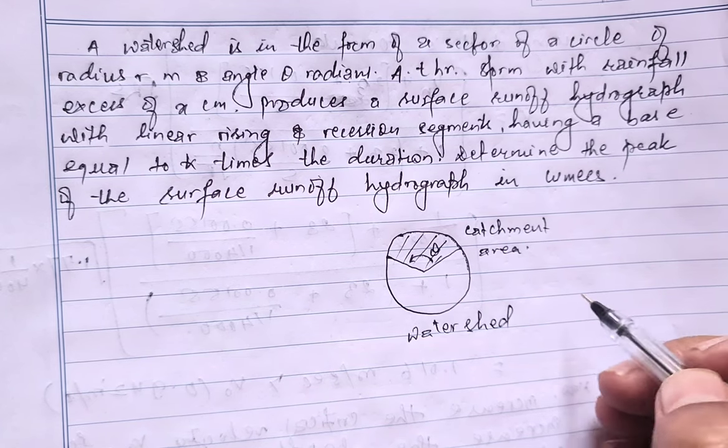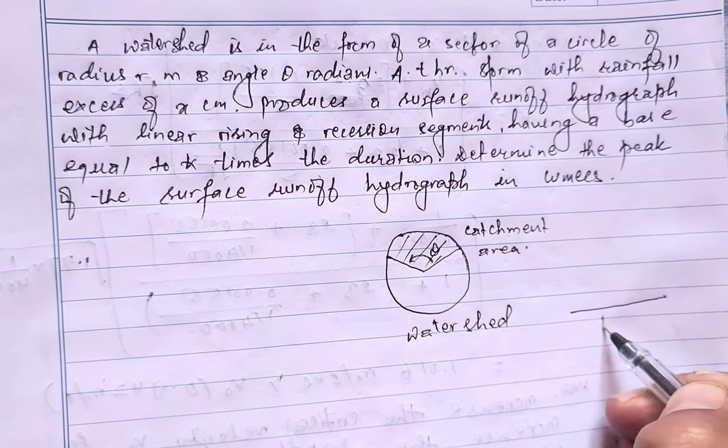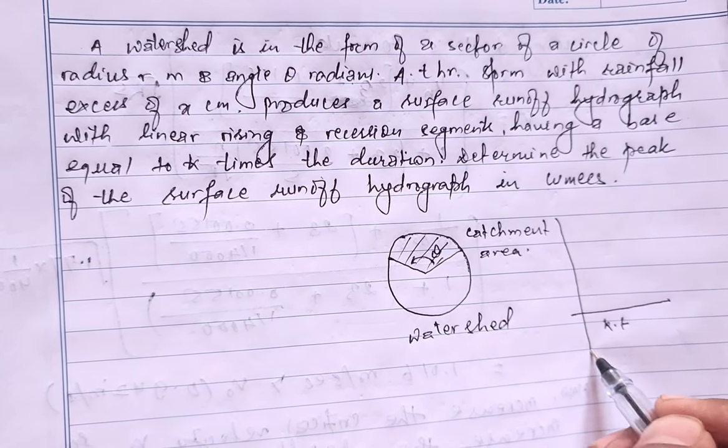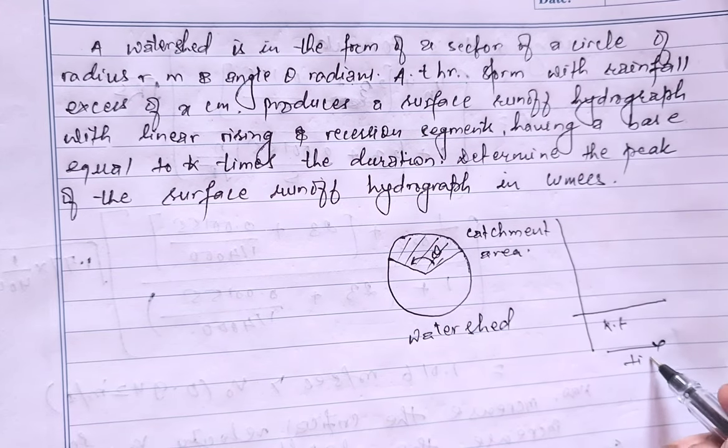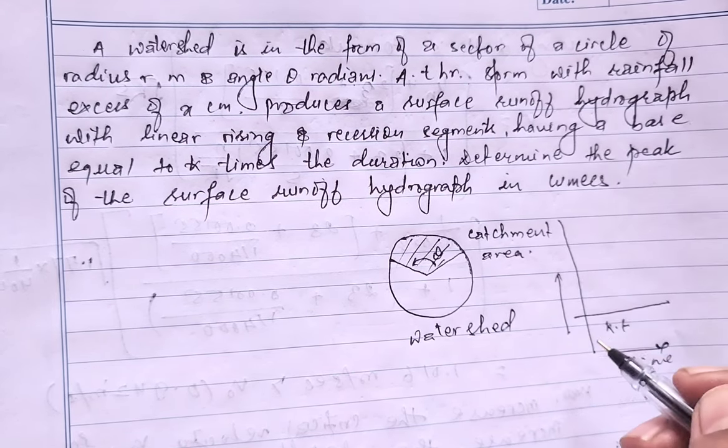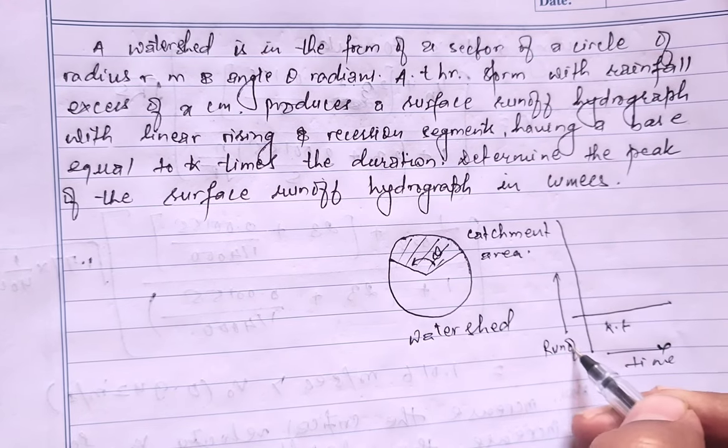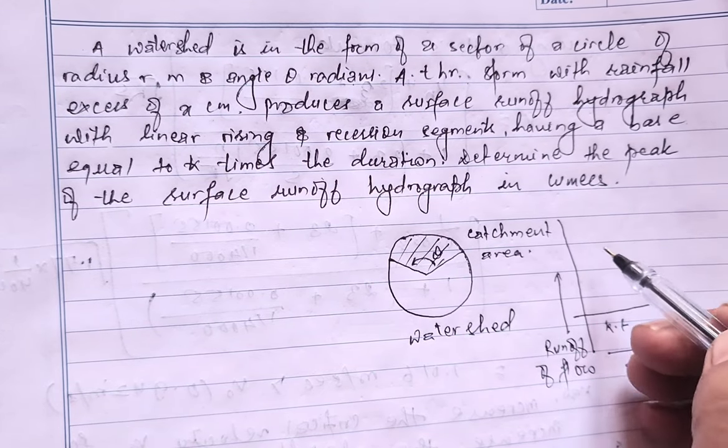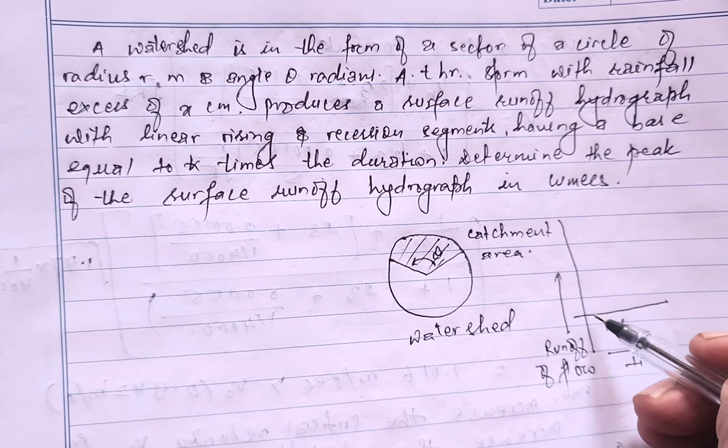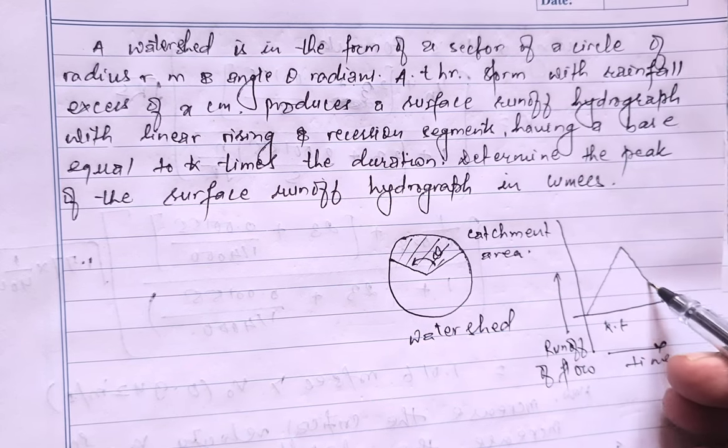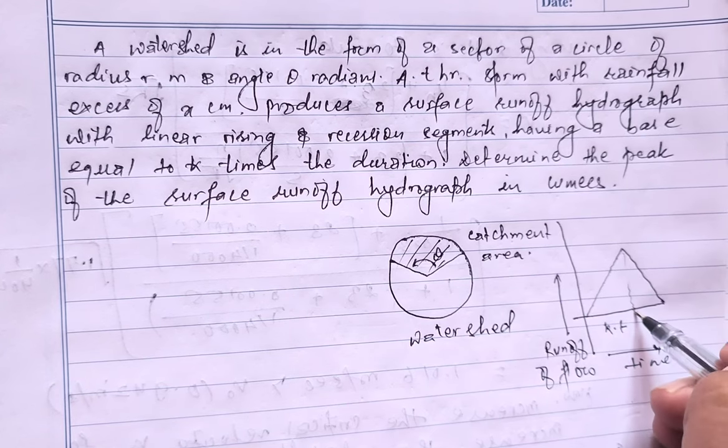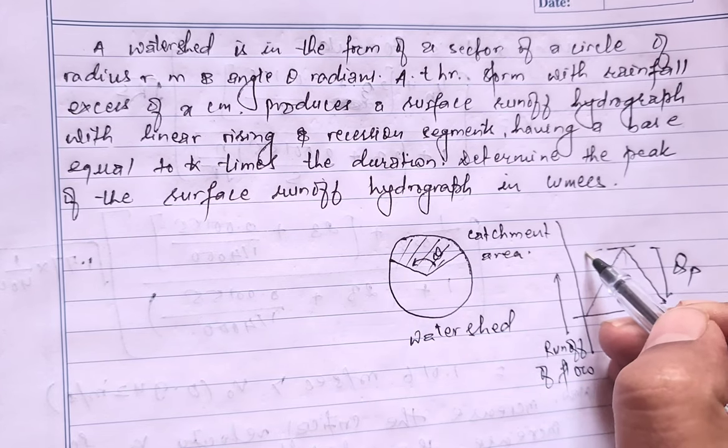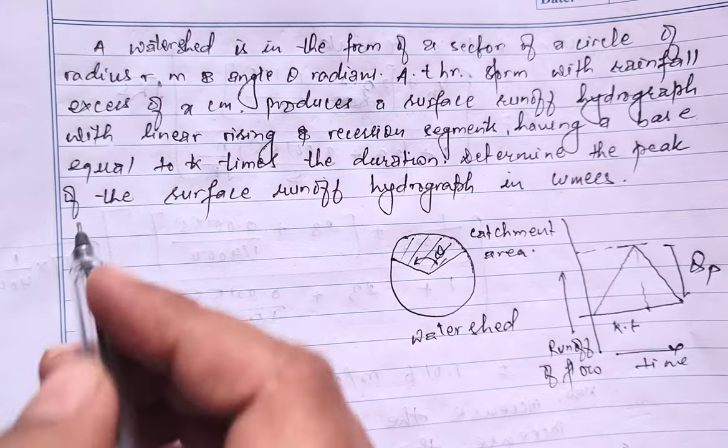Similarly, the hydrograph formed for this - this is for k and t. This one is time and this one is runoff flow. The hydrograph formed is in this way. This is called Qp, the peak discharge. So at this level, let's start solving this.